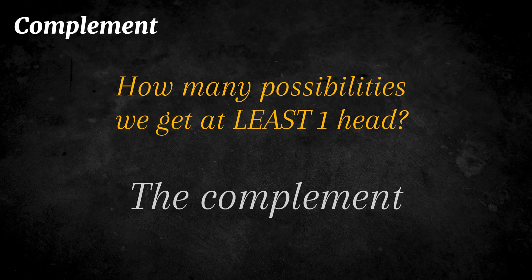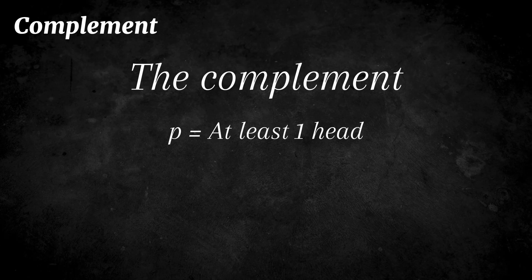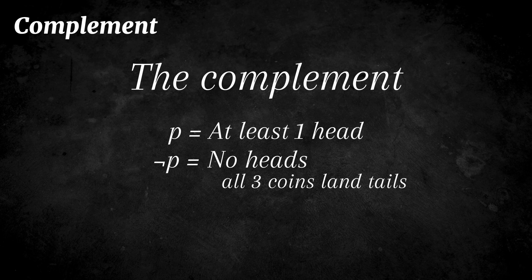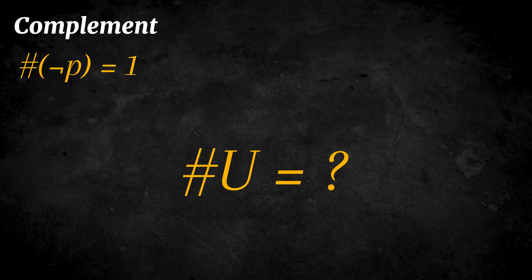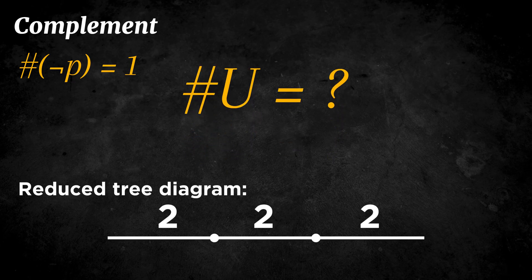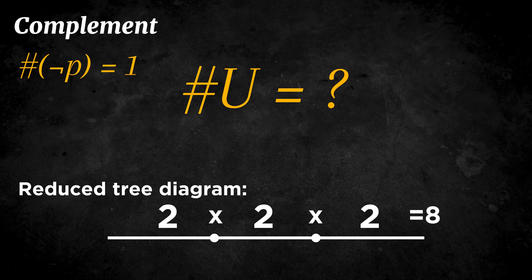Instead, let's use the complement. The opposite of at least one head is no heads at all. That means all three coins land tails. There is only one way for that to happen: tail, tail, tail. Now, how many total outcomes are there when flipping three coins? Each coin has two possibilities, so we calculate two times two times two, which equals eight.